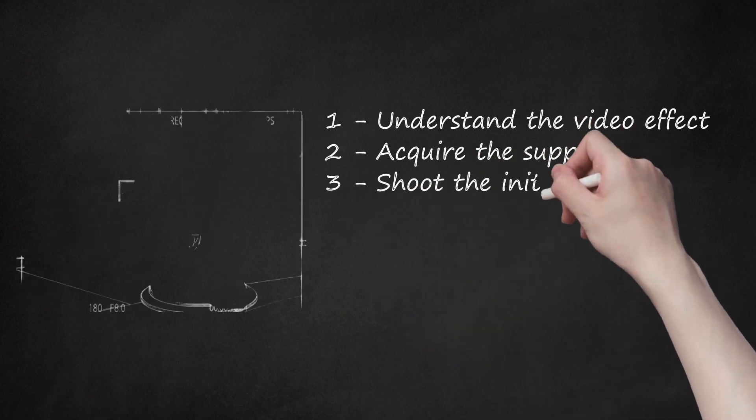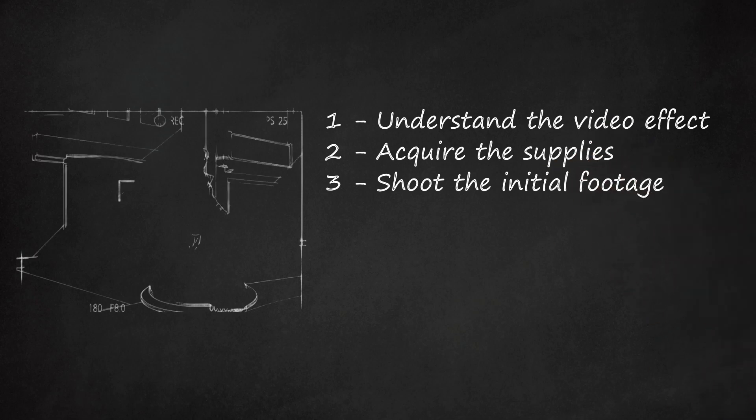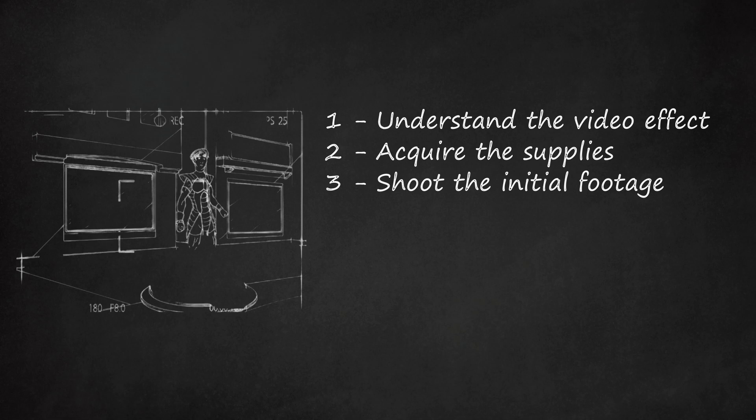Step 3 - Shoot the Initial Footage. For a realistic effect, weave the vanishing effect into your video so it appears seamless. For example, your video is about a futuristic society who teleport for transportation. In this scenario you'd script the dialogue in a way that the characters are talking about teleporting somewhere or are preparing to teleport. Shoot the footage up until the moment that you want the characters to disappear.